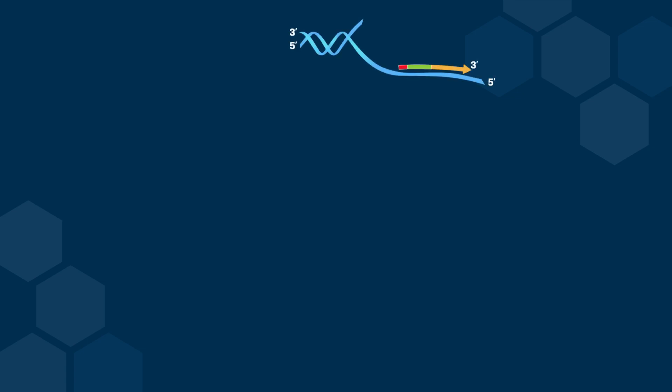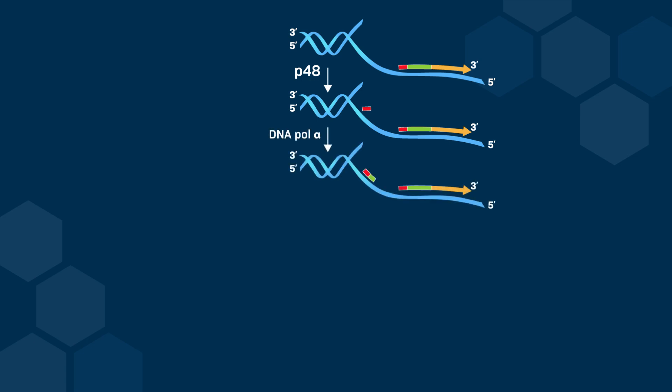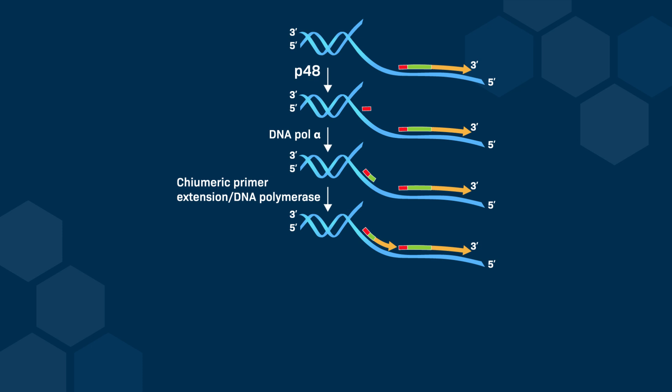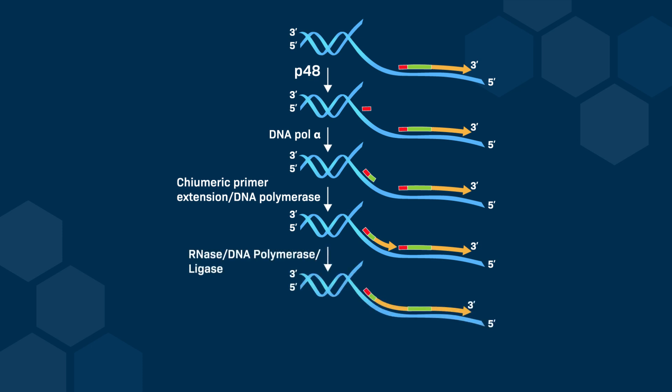Let's look at the synthesis of an Okazaki fragment. If we have a pre-existing Okazaki fragment on the right, the DNA primase will bind to single-stranded DNA on the left side. The p48 component of the primase will first synthesize the RNA portion of the primer. Then, DNA polymerase alpha will take over and synthesize the DNA portion of the primer. Once the primer is made, the primase dissociates from its template, and DNA polymerase delta will elongate this chimeric primer. The size of an Okazaki fragment in eukaryotes is about 100-200 bases. DNA polymerase delta will elongate the primer until the Okazaki fragment reaches the pre-existing Okazaki fragment.